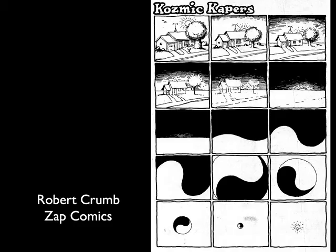Likewise, we see Robert Crumb, the underground comic artist from the 1960s, showing us a sort of typical suburbia transformed into an abstract yin-yang symbol of the cosmos and then vanished into nothing. These are all examples of how metamorphosis can be employed in a comic format.